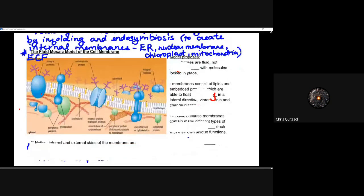When we look at that model on the left here, that diagram, it's very important to recognize that these membranes are fluid and they are not rigid. Their molecules are not locked in place — they're fluid and they move as they need to. Anytime cells are going to be performing any functions, you need to know how those functions work and the organelles responsible for that. The membrane is kind of like the gate for all of those cellular organelles. These membranes consist of lipids and are embedded with proteins which are able to freely move in a lateral direction along that cellular membrane.